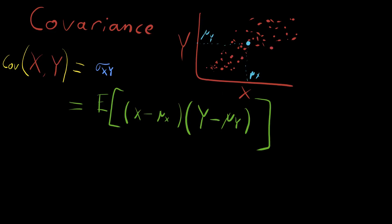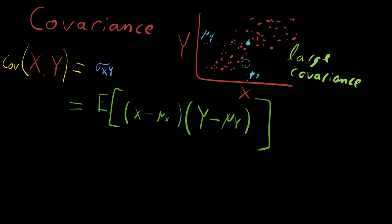This is a distribution where the covariance between x and y is large. That makes sense because when x is far away from its mean — when x is varying a lot — y is also varying a lot. The answer is yes, it is. Thus the covariance of these two parameters is quite large, and sigma xy is big.